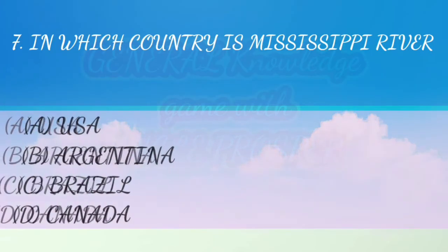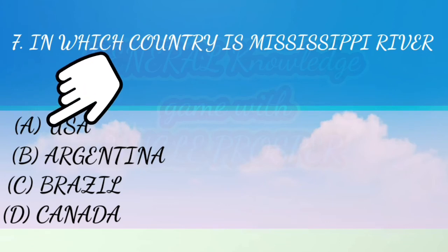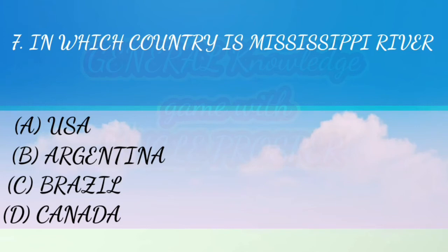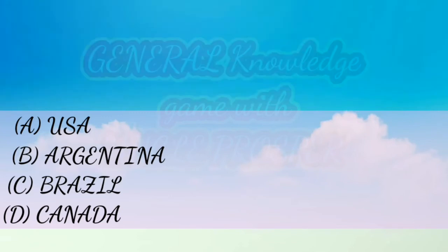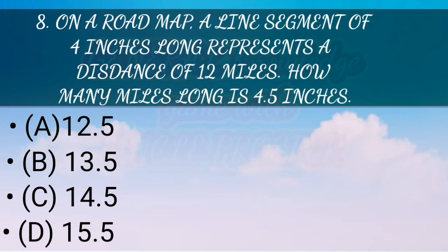Question seven: In which country is the Mississippi River? The Mississippi River is in the USA. In fact, Mississippi is also the name of a state in the USA. In our primary school rhymes we often called it the longest river in the world, but according to Google, the River Nile is the longest river in the world. Let me know your thoughts in the comment box.